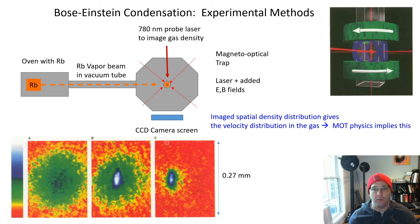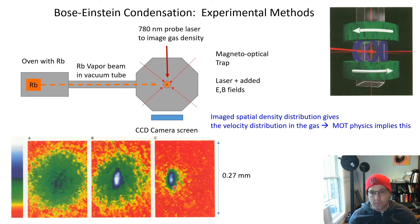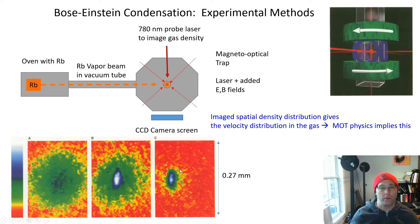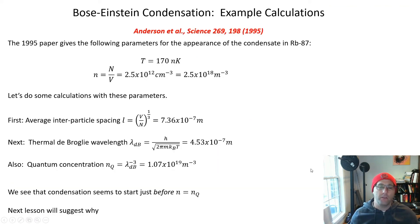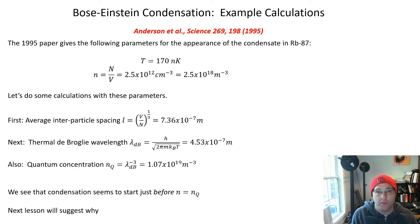Essentially, by looking at the spatial distribution inside the trap you get the velocity distribution. What you see with the blue — which means high-density region — is that at cold enough temperatures all of the atoms are falling into a state with the same velocity, corresponding to the same quantized energy level. In other words, these are all ground-state atoms shown in blue. Let's do a quick calculation of what conditions you need to achieve to get a Bose-Einstein condensate.